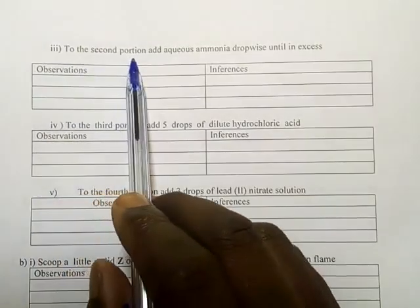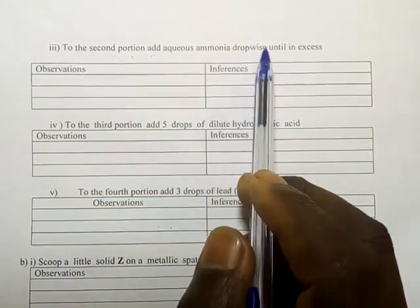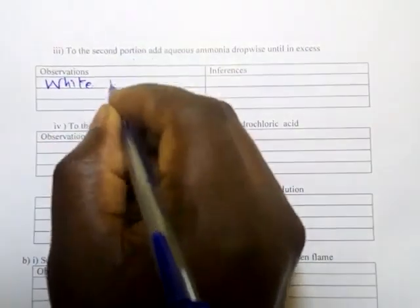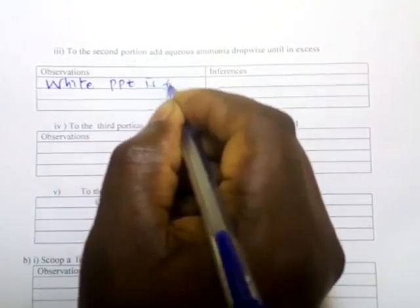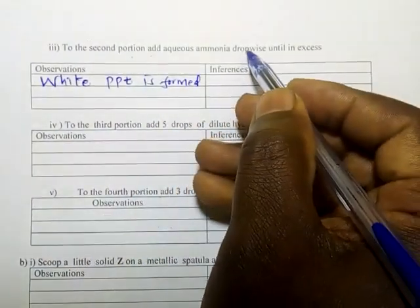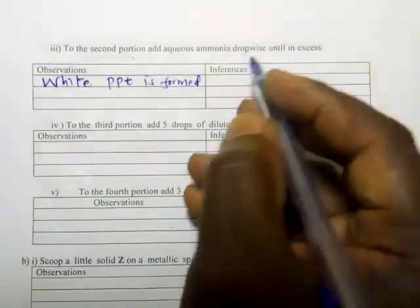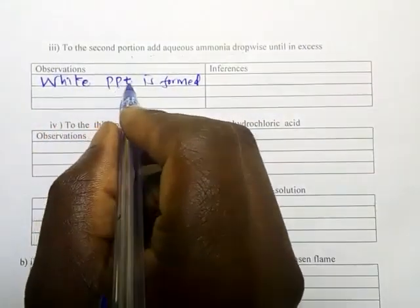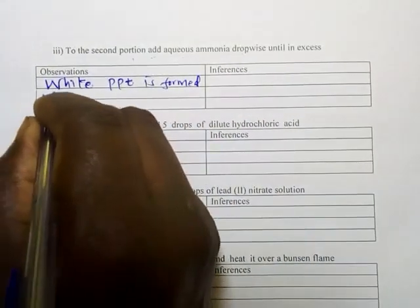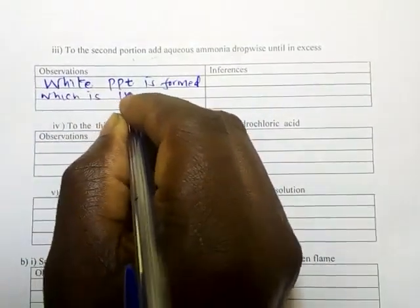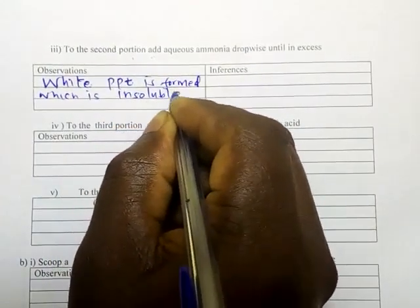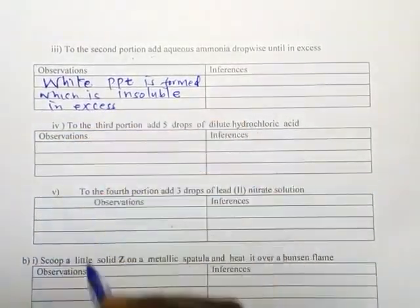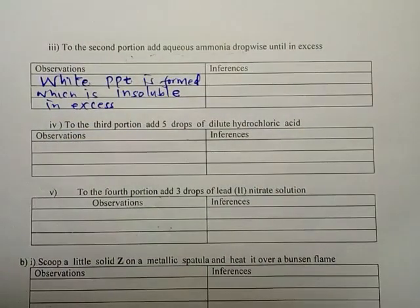To the second portion, add aqueous ammonia dropwise until in excess. White precipitate is formed. That is for dropwise. What happens in excess? The white precipitate does not dissolve in excess. So a white precipitate is formed which is insoluble in excess.